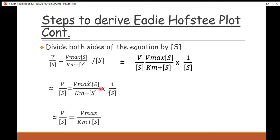In further simplification of the equation, we have v/[S] on the left side, and on the right we have V_max times [S] divided by (K_m + [S]). As you can see, the [S] in the numerator and the 1/[S] cancel each other, giving us v/[S] equals V_max divided by (K_m + [S]).